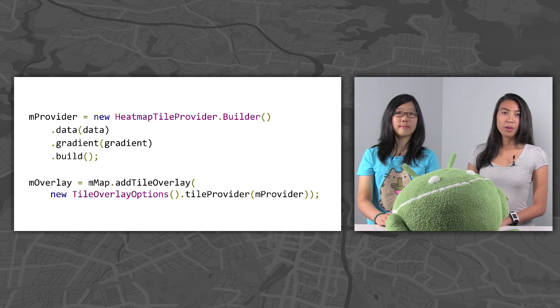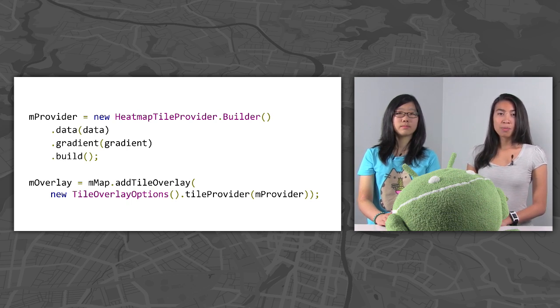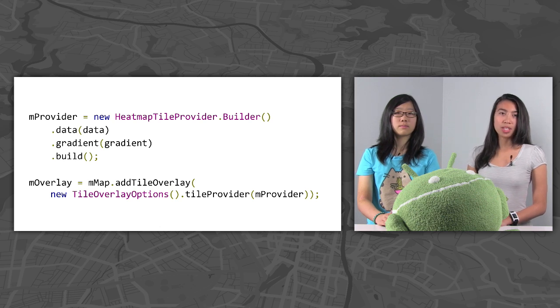To start off with, create a new heat map tile provider using the builder. You must provide a collection of lat/longs or weighted lat/longs that represent your input data. A weighted lat/long can be created from a lat/long and optionally has an intensity value that you can use to weight points.